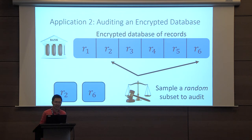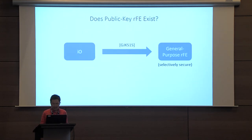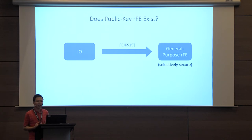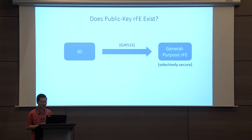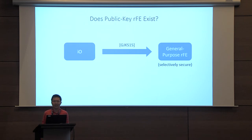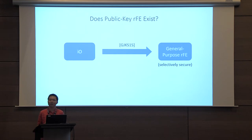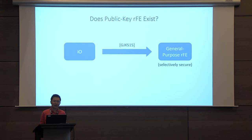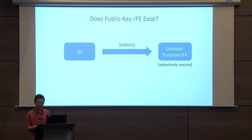The natural next question is whether these schemes exist at all. In a work by Goyal, Jiang, Coppola, and Sahai in 2015, they formally defined the notion of functional encryption for randomized functionalities — which I'll refer to as RFE — and showed that starting from general-purpose indistinguishability obfuscation, you can build a general-purpose functional encryption scheme for all randomized functionalities, assuming IO exists.